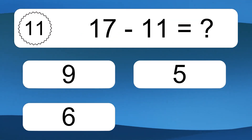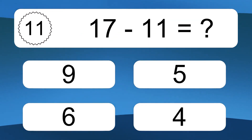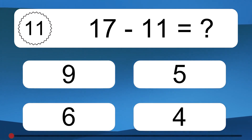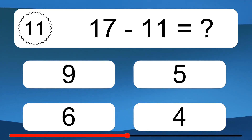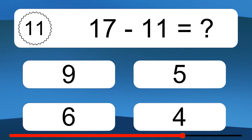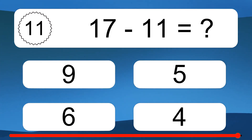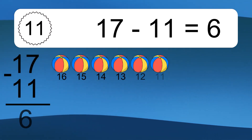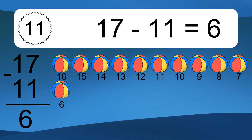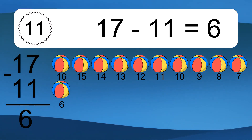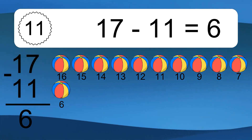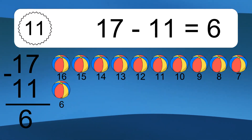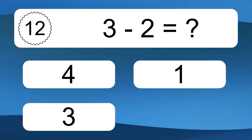17 minus 11 equals what? 17 minus 11 equals 6. Let's count it: 16, 15, 14, 13, 12, 11, 10, 9, 8, 7, 6.